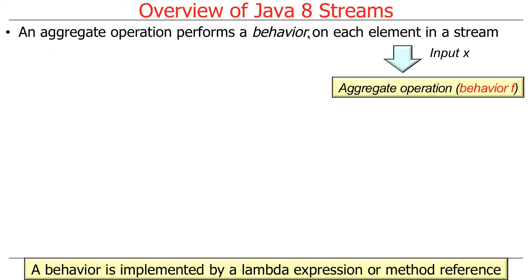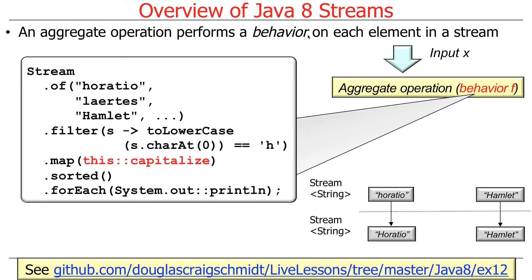Once you have a stream, you can perform aggregate operations on each element in the stream. This is done by aggregate operations that are passed a behavior. Tying this back to our earlier discussion, these behaviors are implemented by lambda expressions or method references. All the stuff we talked about before — functional interfaces, predicates, functions, consumers, suppliers, etc. — those are the kinds of things passed as parameters to the aggregate operations in a stream. Map is a common aggregate operation, and we're passing in a behavior which is a method reference to a function that will capitalize the first character in whatever string it receives.